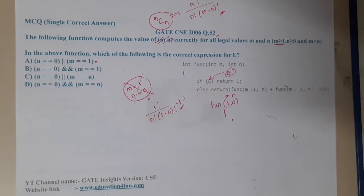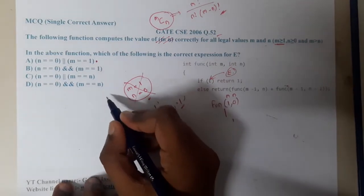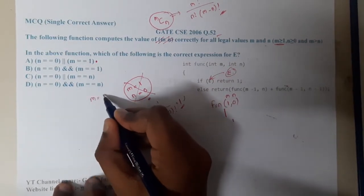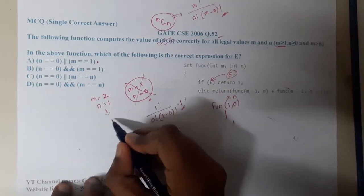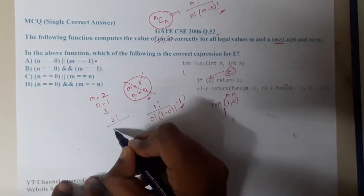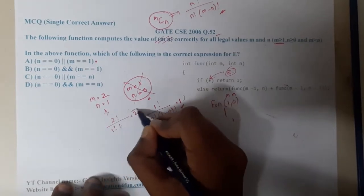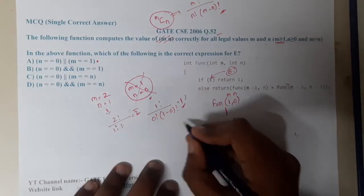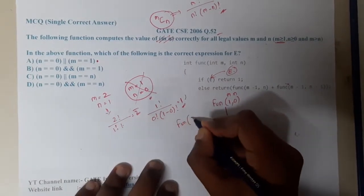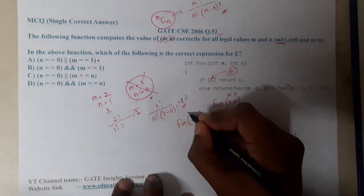Let us take another example: m = 2, n = 1. The answer is 2! / (1! × 1!) = 2. So func(2, 1) should return 2.